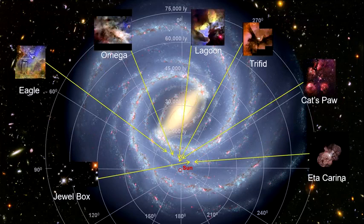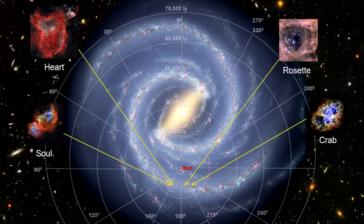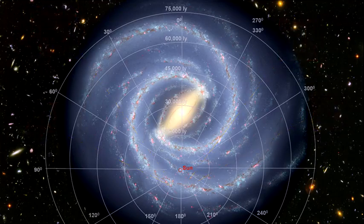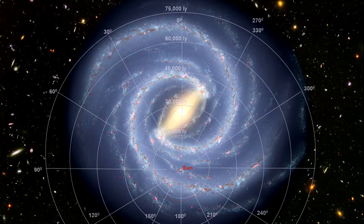In Sagittarius, we see the jewel-box star cluster and the Trifid, Omega, Lagoon, Eagle, and Cat's Paw nebulae, among others. In Perseus, we see the Rosette, Heart and Soul nebulae, as well as the Crab Supernova, to name just a few. In fact, except for the hypervelocity stars and a few of the supernova remnants, everything we have seen in this chapter is within this red circle. As vast an area as we have covered, it is only a fraction of the Milky Way galaxy.